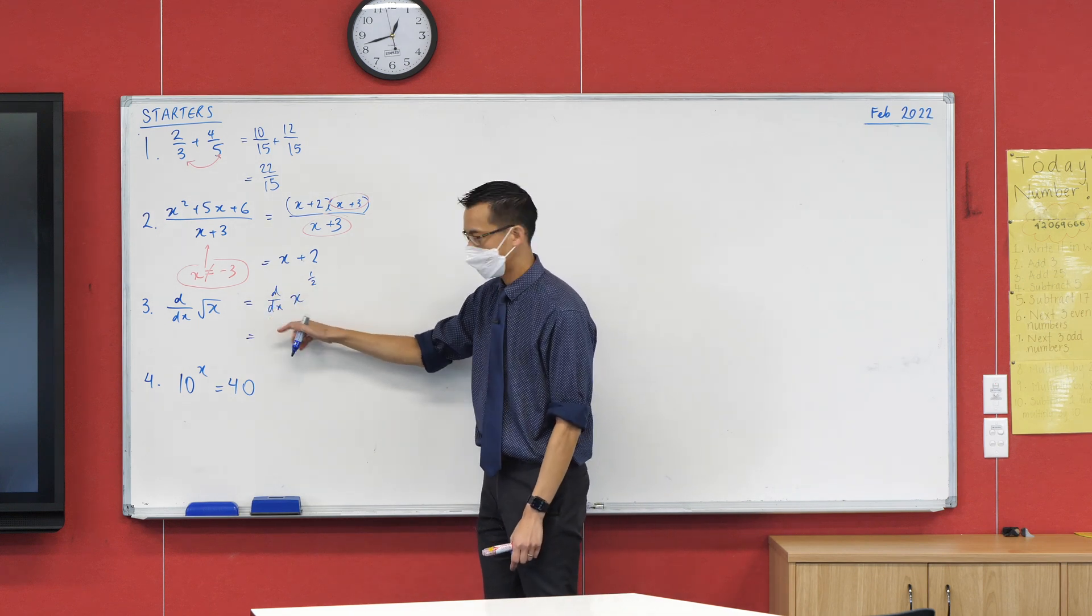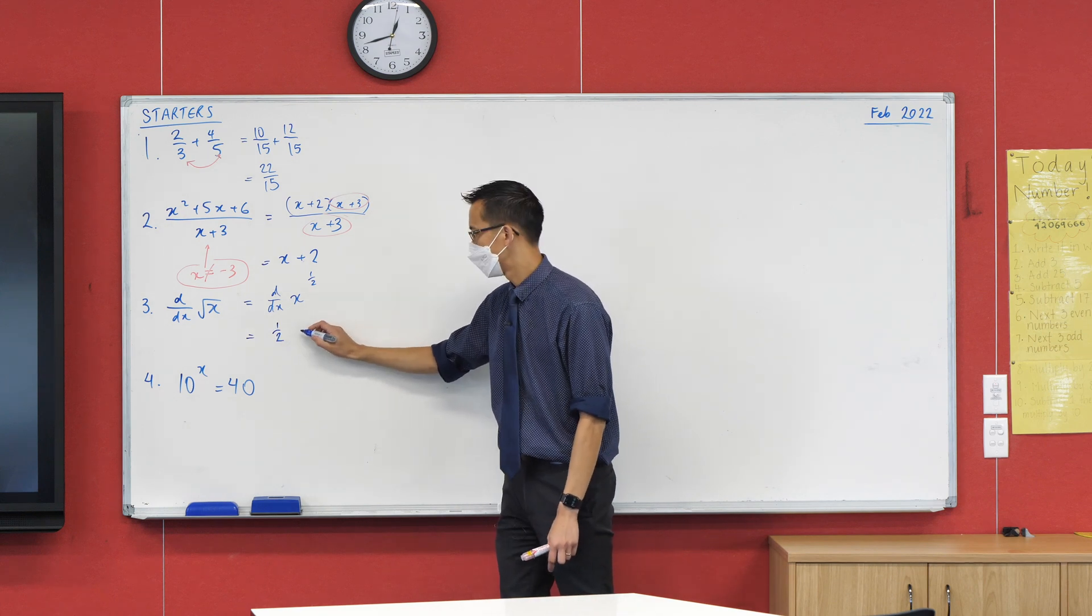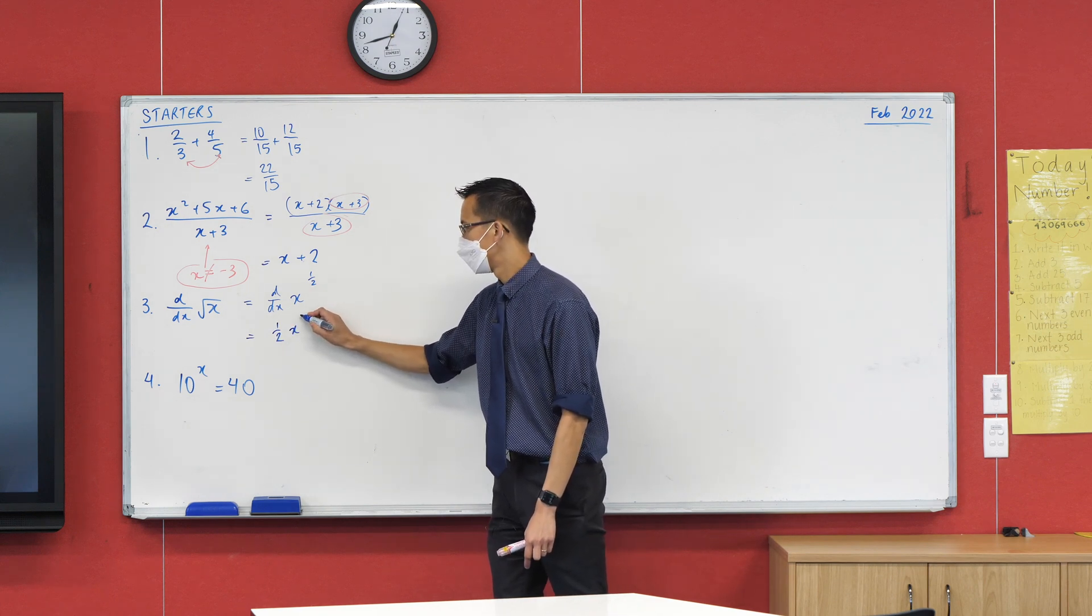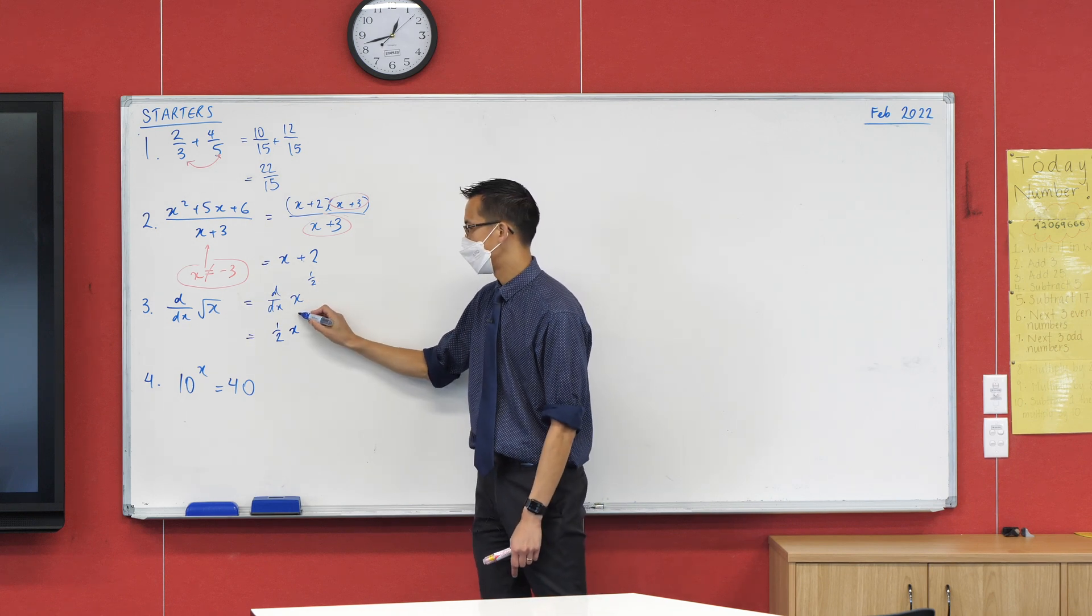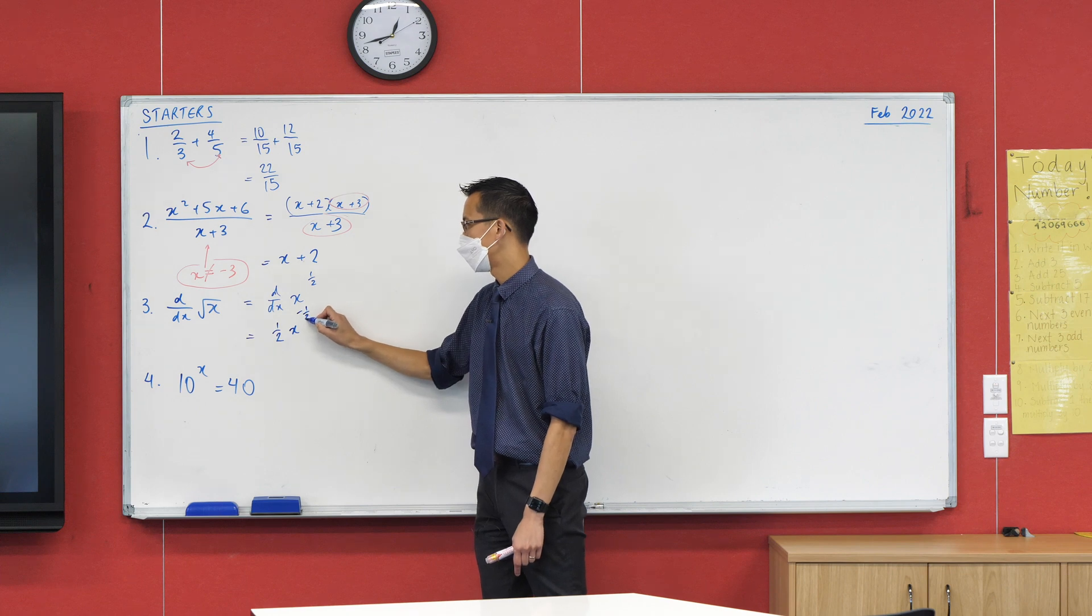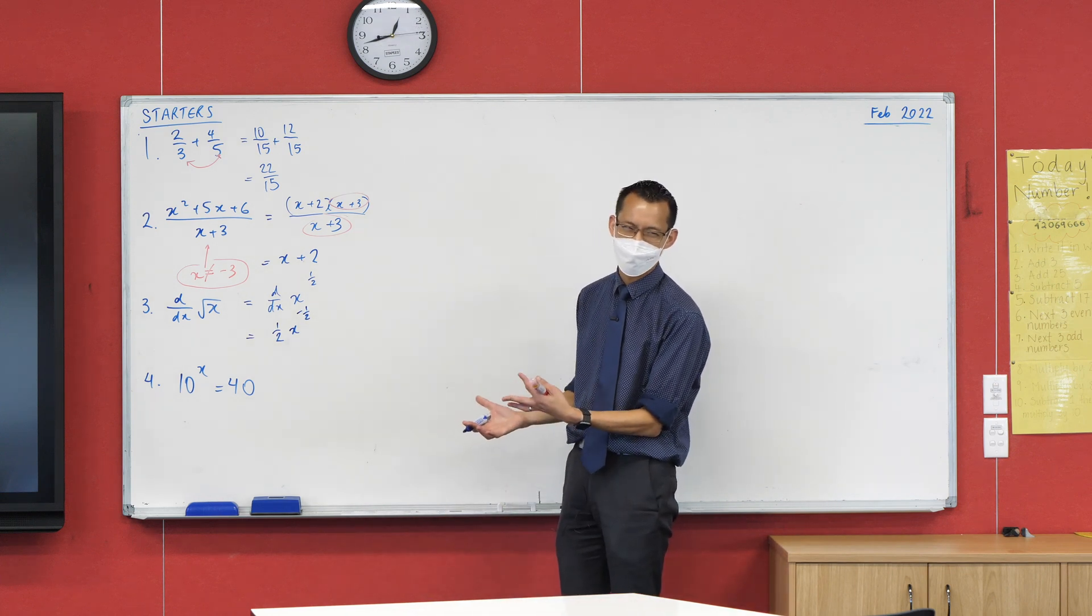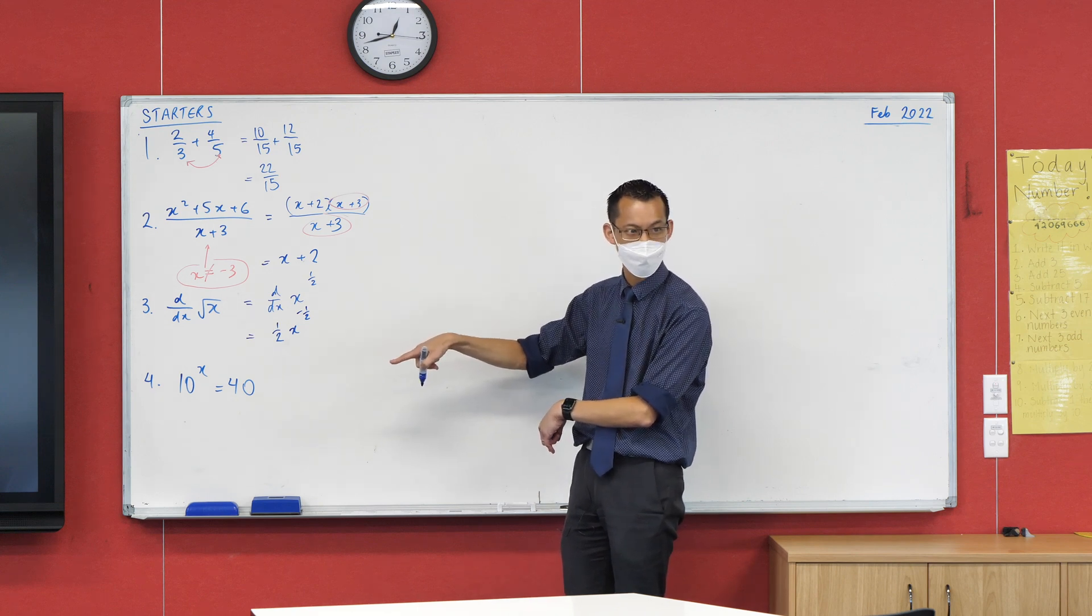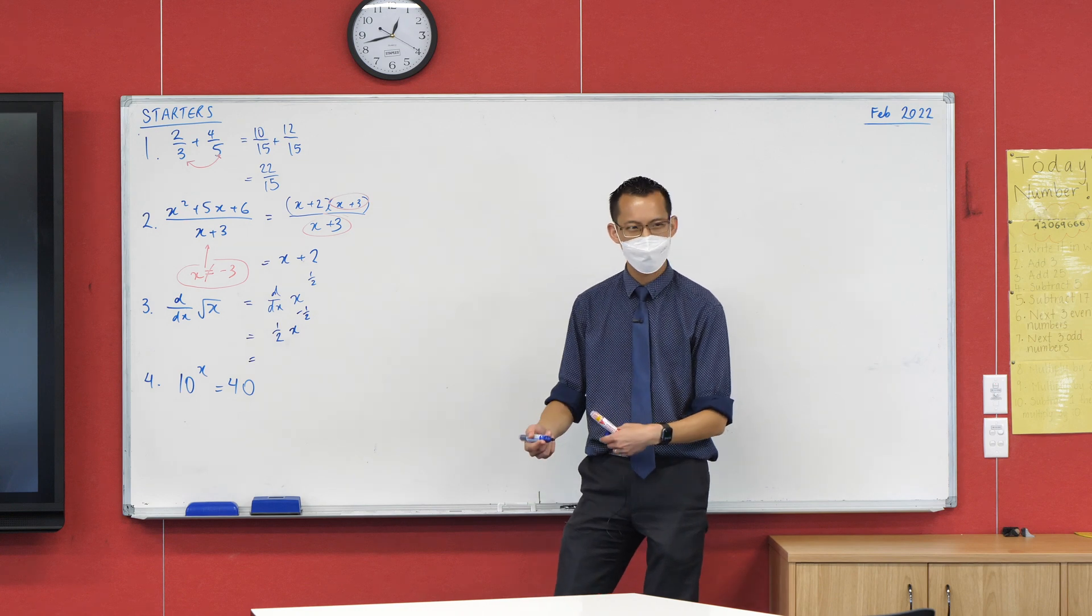Like, that's the thing you're being asked to do, and because it's something raised to a power, you're like, oh, I have a rule for that, right? So I'm going to bring the power at the front, and then what's the next step you do? X to the power of whatever 2 minus 1. Yeah, exactly. So we'll subtract one from that, which I guess would be negative a half.